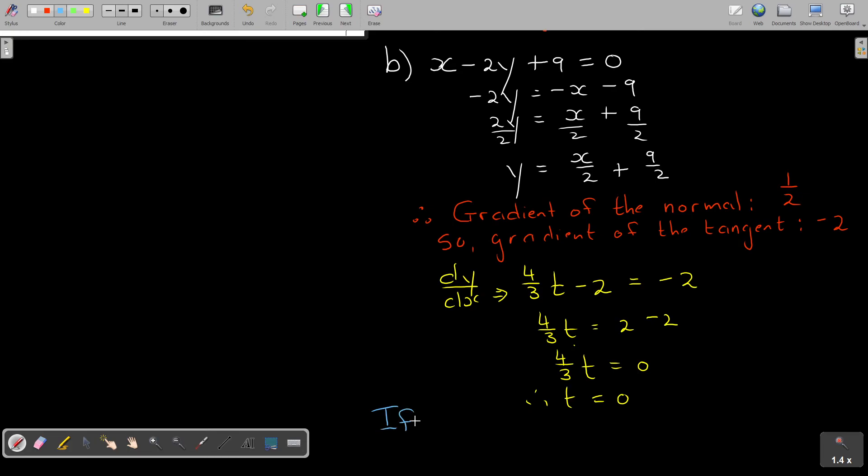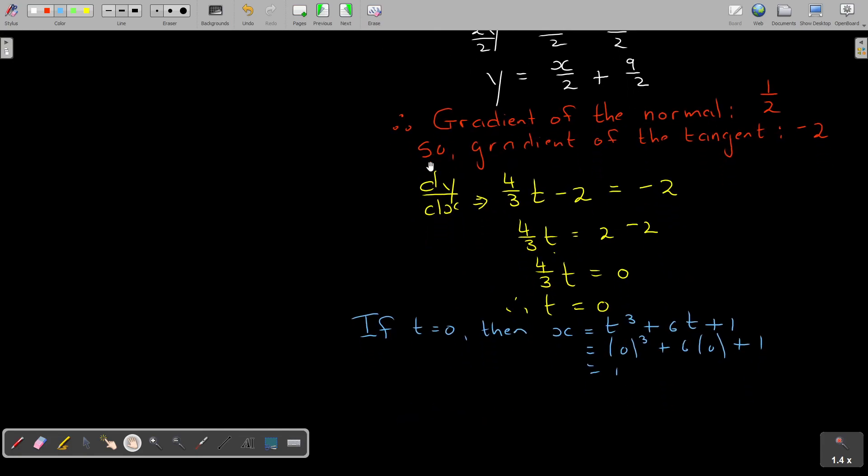Now, I'm basically saying that this, because this is representing the gradient, that is equal to negative 2. So I'm going to have 4 over 3t is 2 minus 2 because that becomes positive. Oh, that's a problem. No, it's not a problem. You can get 0. I divide. So, therefore, what is the value of t? The value of t is 0. I was looking for the value of t because if I have the value of t, to find that coordinate, I can substitute it into my original equation.